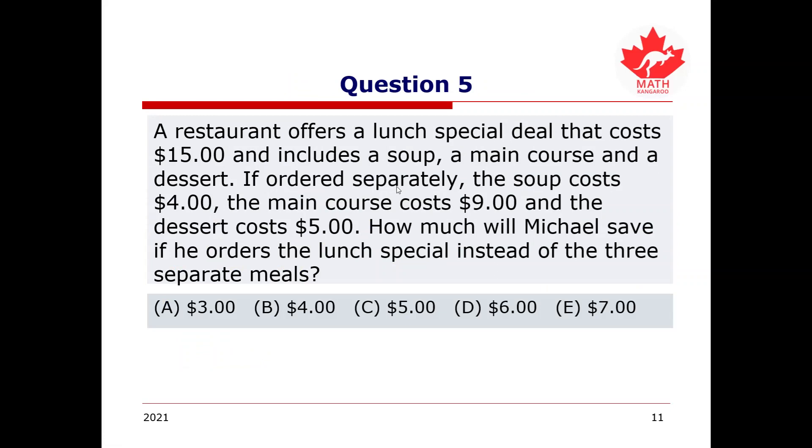So, for question five, a restaurant offers a lunch special deal that costs $15 and includes a soup, a main course, and a dessert. If ordered separately, the soup costs $4, the main course costs $9, and the dessert costs $5. How much will Michael save if he orders the lunch special instead of the three separate meals? And you can pause the video and try to work out the answer for yourself. All right, have you gotten the answer? Let's check it out.